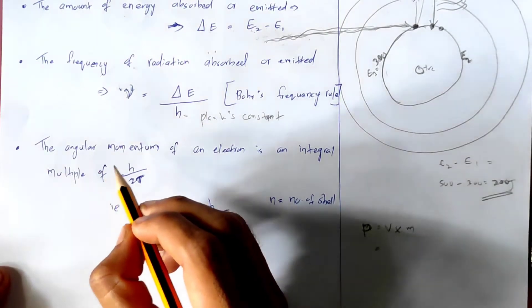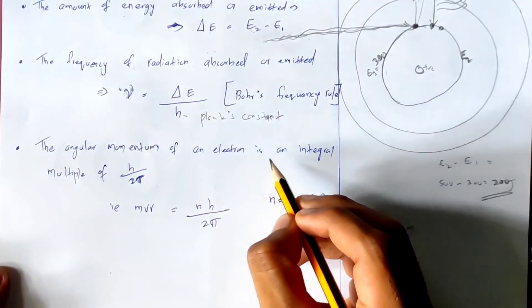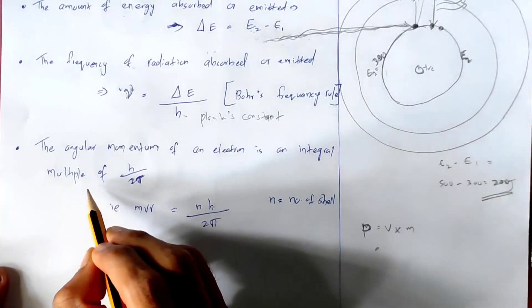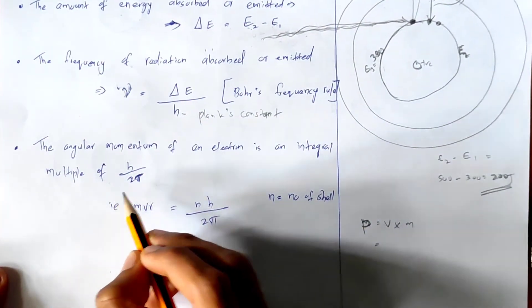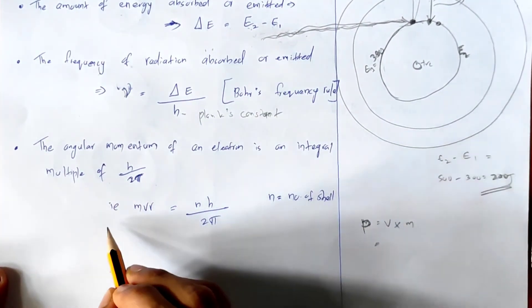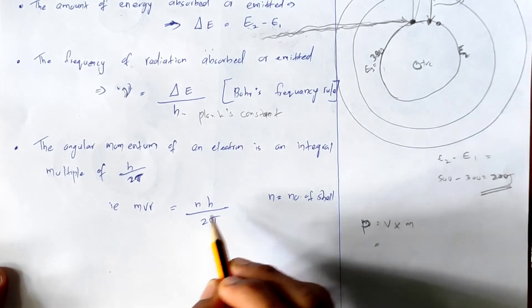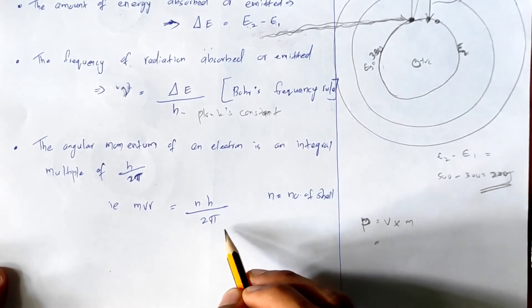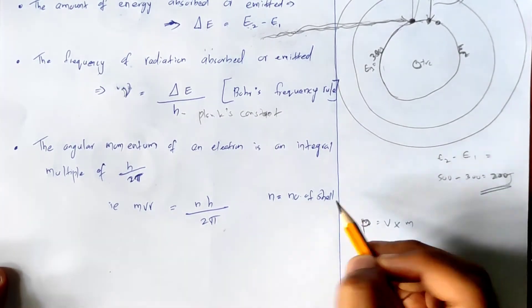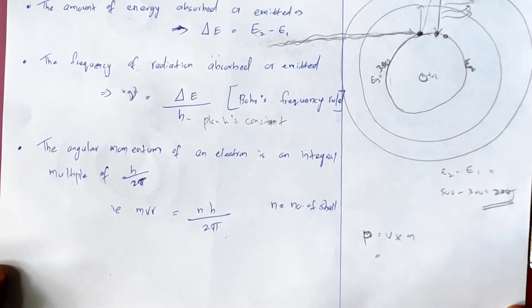The angular momentum of an electron is an integral multiple of h by 2 pi. That is: mvr equals nh divided by 2 pi, where n is equal to the number of the shell.